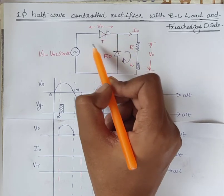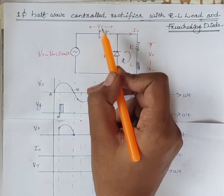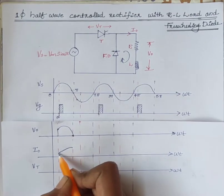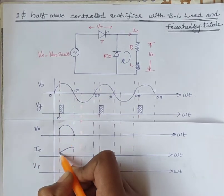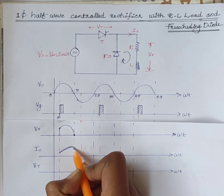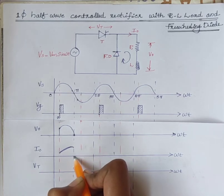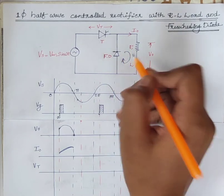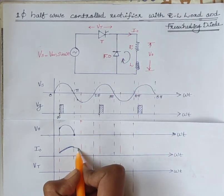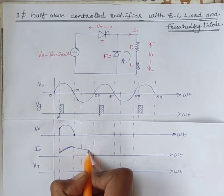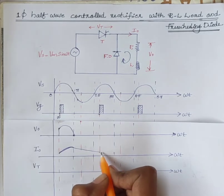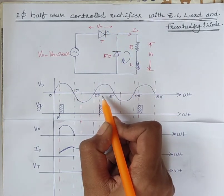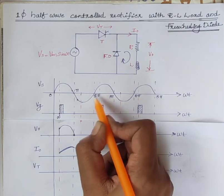As a result, the SCR is turned off at omega t equal to pi. At omega t equal to alpha, I0 increases gradually, and at omega t equal to pi, I0 current flows through the freewheeling diode. This I0 current flows through the freewheeling diode until the SCR is triggered again at omega t equal to 2pi plus alpha.